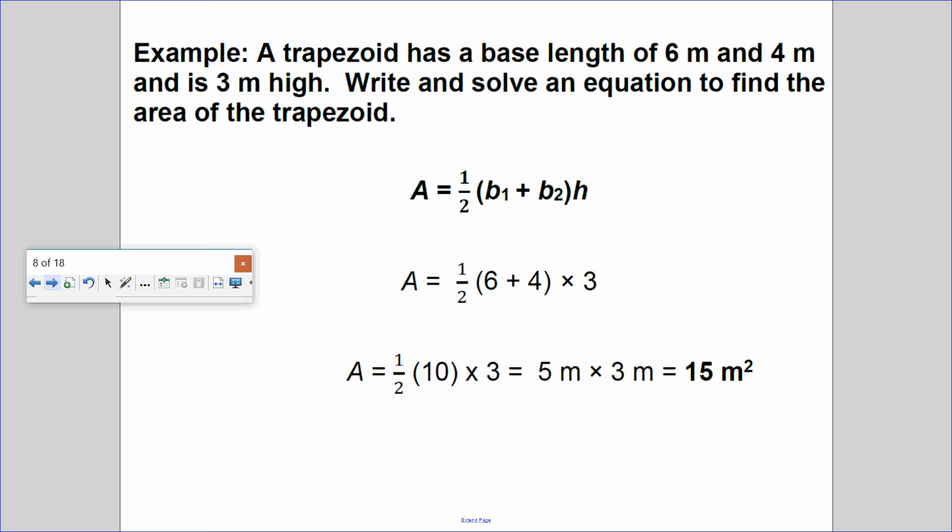For example, a trapezoid has a base length of six meters and four meters and is three meters high. Write and solve an equation to find the area of the trapezoid. So we see half of the bases times the height. I replace base one and base two with six and four. We add it up. Half of ten is five times the height of three is 15 square meters.